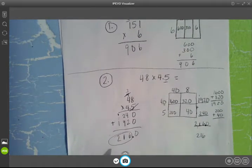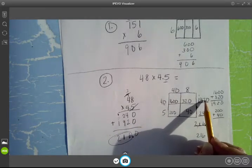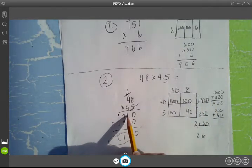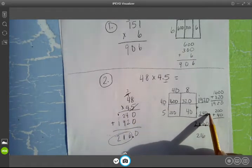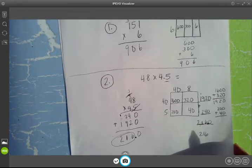And also notice, 1, 9, 2, 0 matches 1, 9, 2, 0. 2, 4, 0 matches 2, 4, 0.